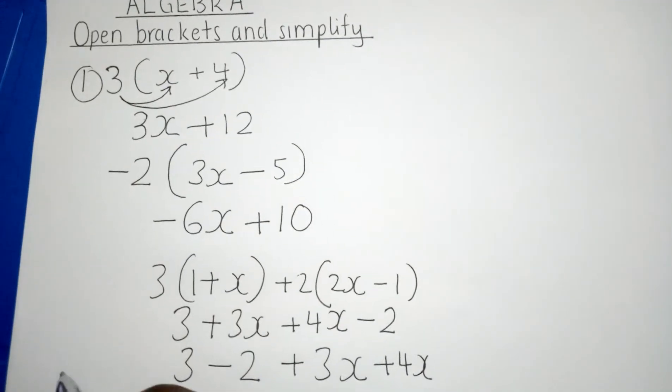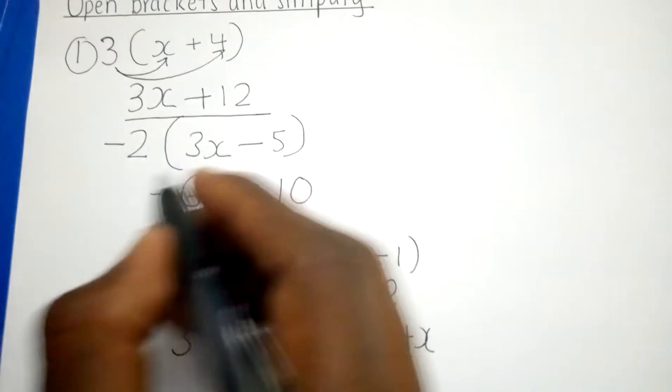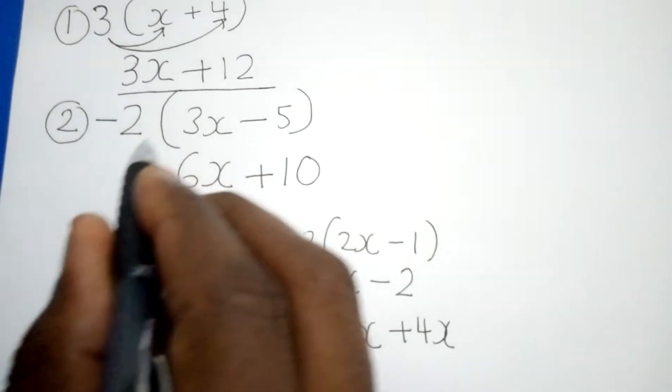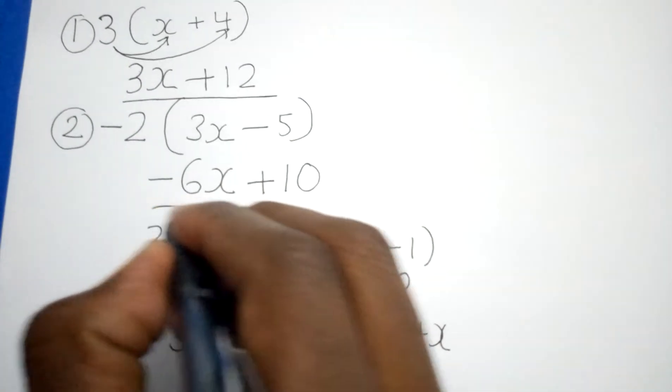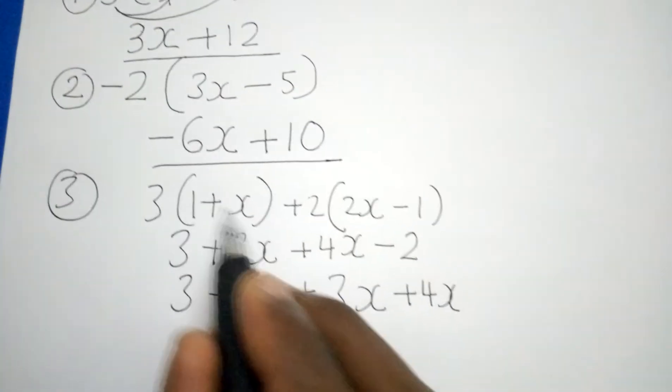Hence I have opened this bracket and I have simplified. Remember we started by seeing how do we open a single bracket, then we got this answer. We came second example, how do we open bracket if we have a negative and we got that answer. And our third example we combined two brackets.